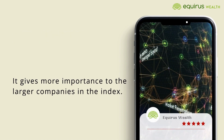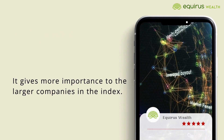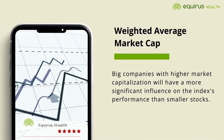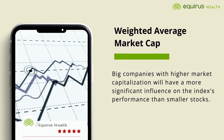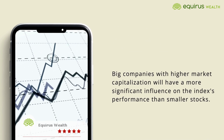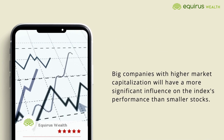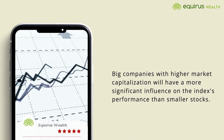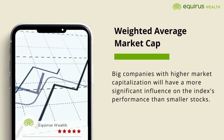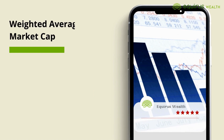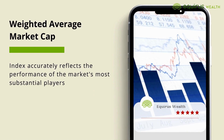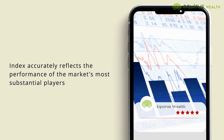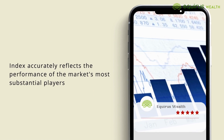In other words, it gives more importance to the larger companies in the index. This means that big companies with higher market capitalization will have a more significant influence on the index's performance than smaller stocks. A company worth billions should have a more significant impact on the index's movements than a smaller one. This method ensures that the index accurately reflects the performance of the market's most substantial players, mirroring their significance in the real-world market.